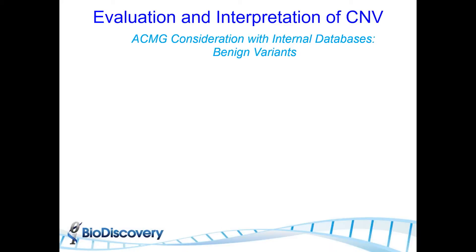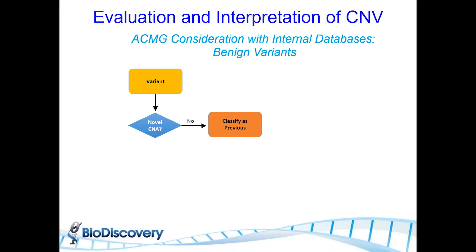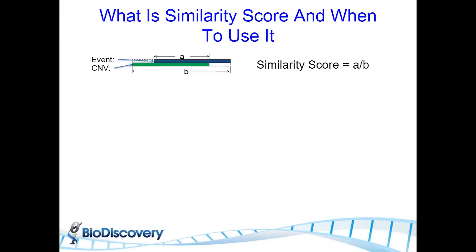Let's look at an example of evaluation and interpretation of a single CNV using our different ACMG rules. The first rule is our internal databases — our own legacy samples — in the context of benign variants or known artifacts we commonly see in our arrays. Given a variant in question, the first question is: is this novel or new? Is it a new change or something we commonly see among a normal population that's not known to be pathogenic? If it's not novel — it's something normal — we can classify it as previous based on our similarity score.